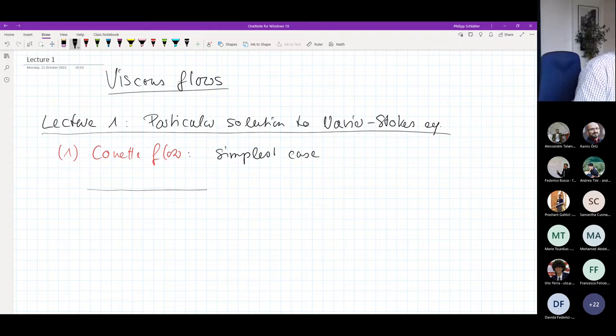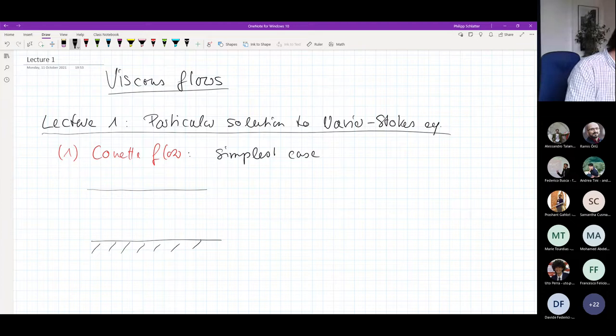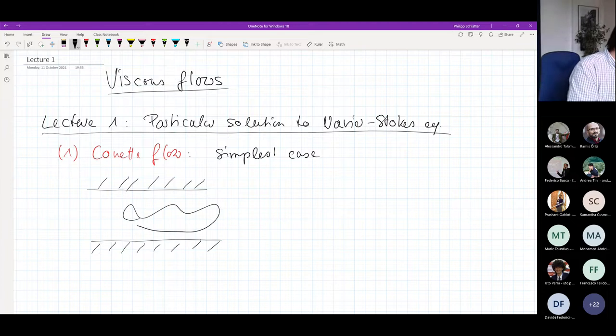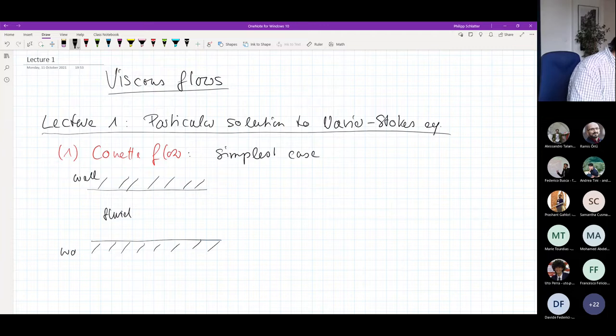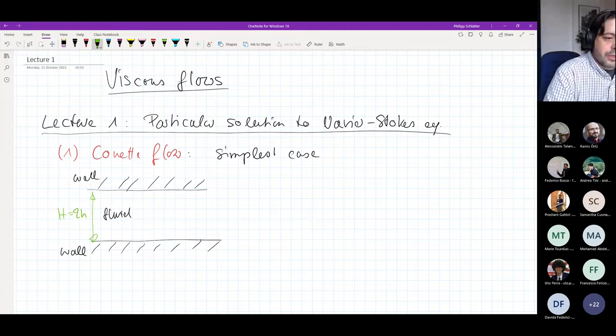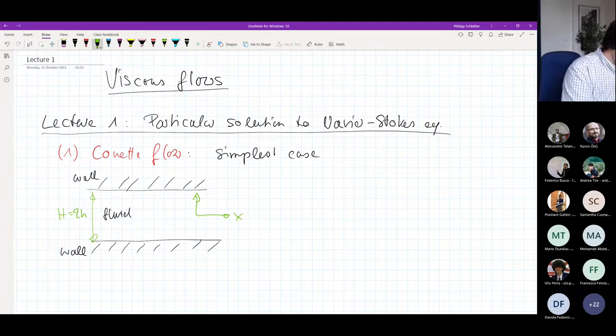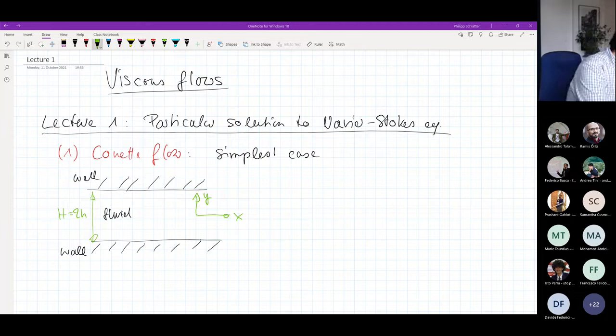It's the simplest case of a shear flow. The idea is we have a domain, or we have a certain volume of fluid, which is between two straight walls. There's fluid between two walls. We say that this height, the distance between these two walls, is capital H being two times small h. We introduce a coordinate system with an x direction and a y direction.